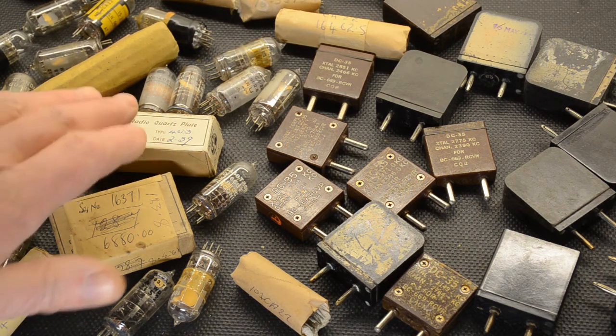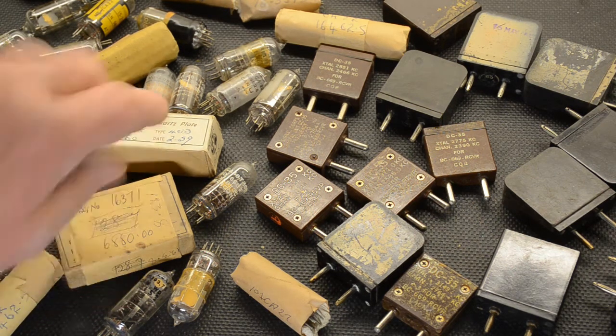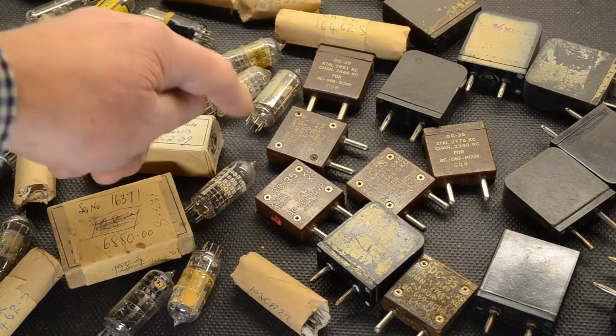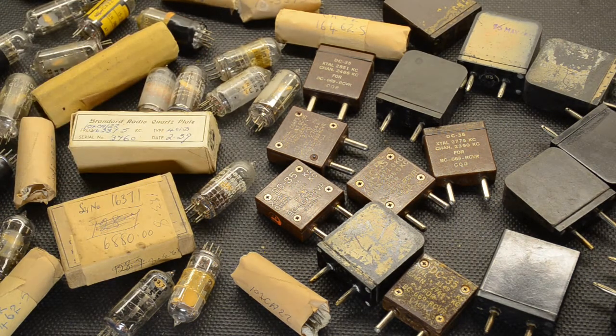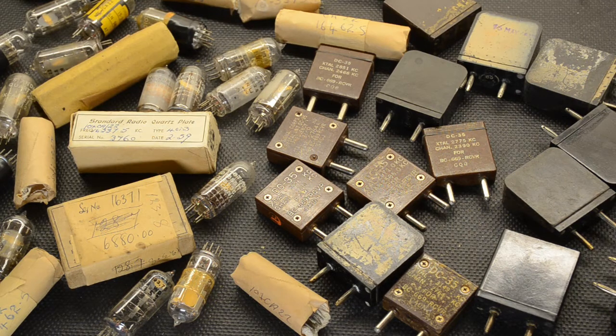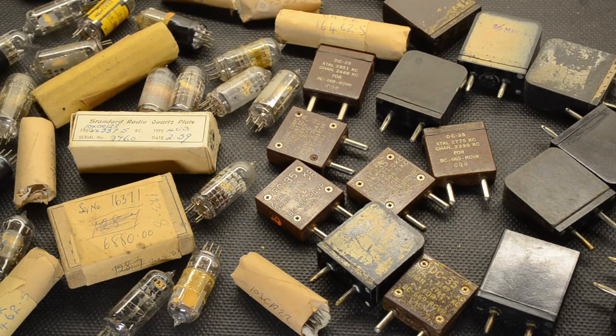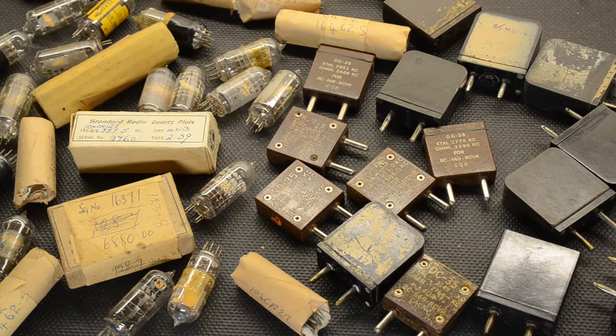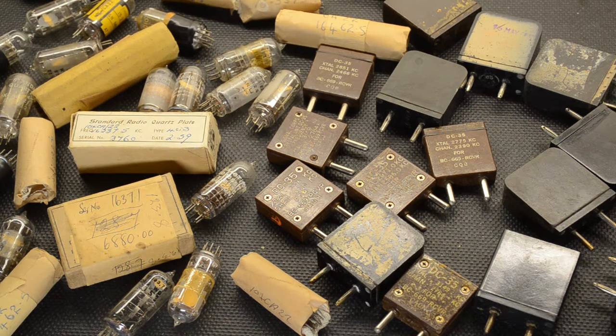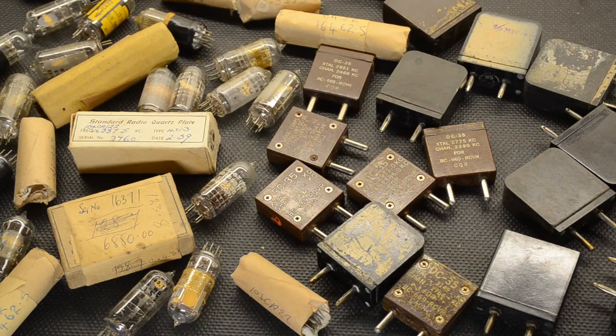These in particular were interesting to us, these little ones in these B7G holder type things. They look like little valves but they're not, they're crystals and we really need to test them. There's about 50 of those needing testing and what better way to do it other than to build a very simple crystal testing thing in order to do so.